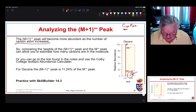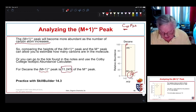So if we compare the height, this is often diagnostic. For decane we can do some math and calculate and we expect that for decane the M plus 1 peak is going to be 11.24%.